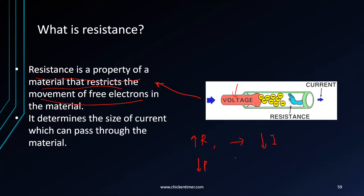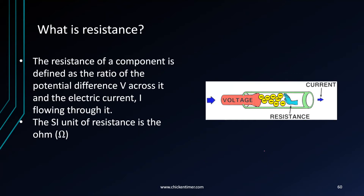If it's low resistance, then the amount of current that can pass through will be high. That is the relation. For a more technical definition: resistance is the ratio of potential difference across it and the electric current flowing through it.